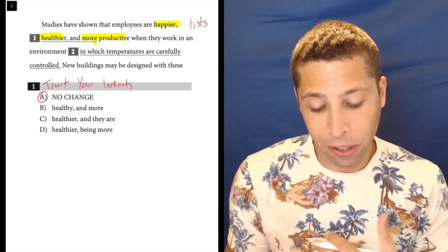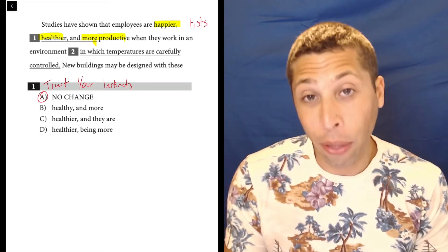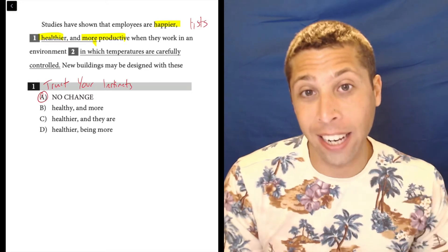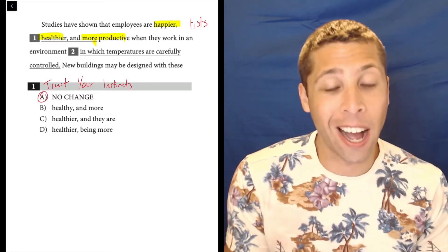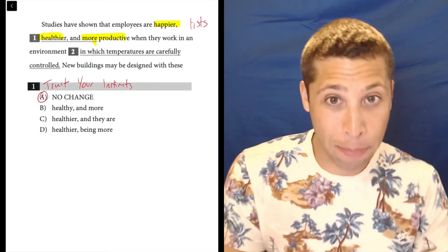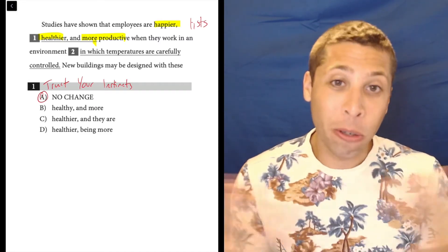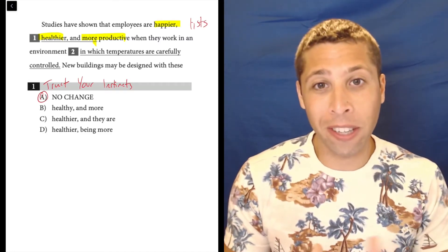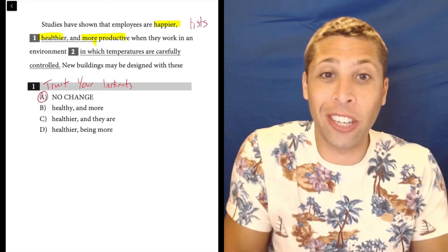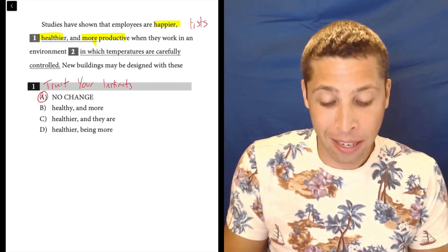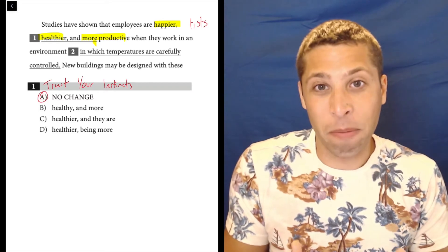Generally speaking, when we have words like happy and healthy, words that are two syllables, we add an R or an ER or an IER and make them happier, healthier. Whereas a word like productive, it's too long, it's too many syllables. So words that are bigger than two syllables generally become something more productive instead of productiver.